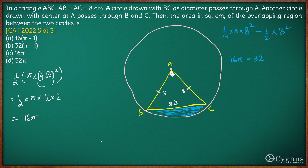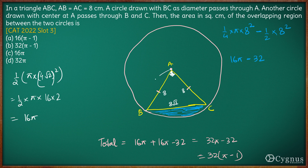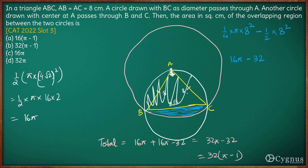Hence, the required total area comes out to be 16π plus 16π minus 32, which is 32π minus 32, giving us 32(π − 1). This is the total area of the required region — the semicircle plus the segment. So the answer is option B: 32(π − 1). That's it for this question, thank you.